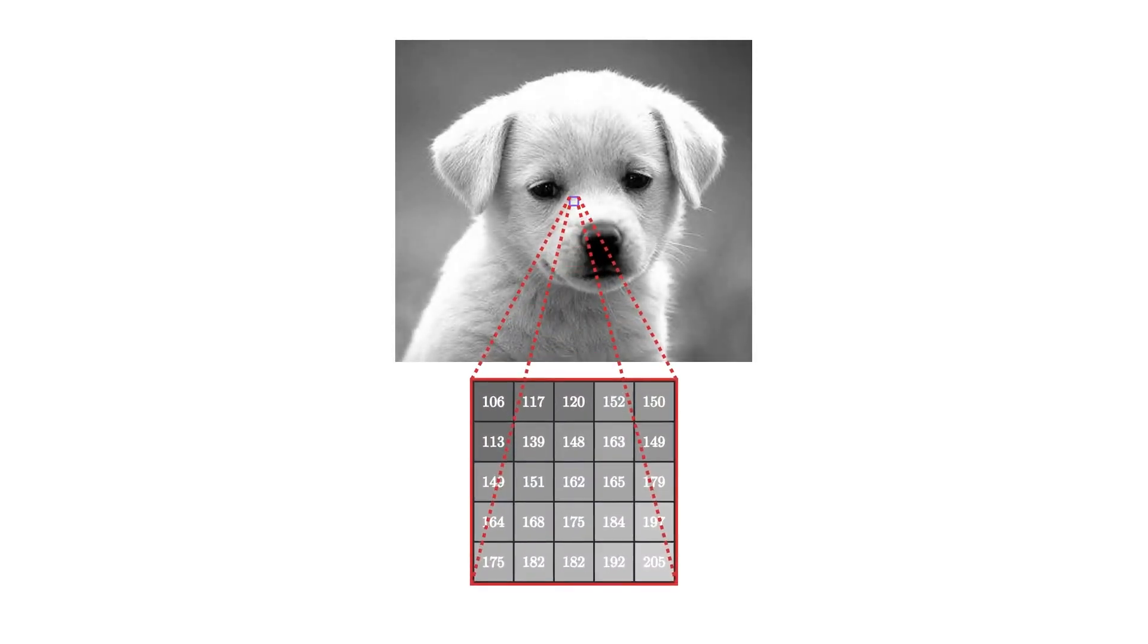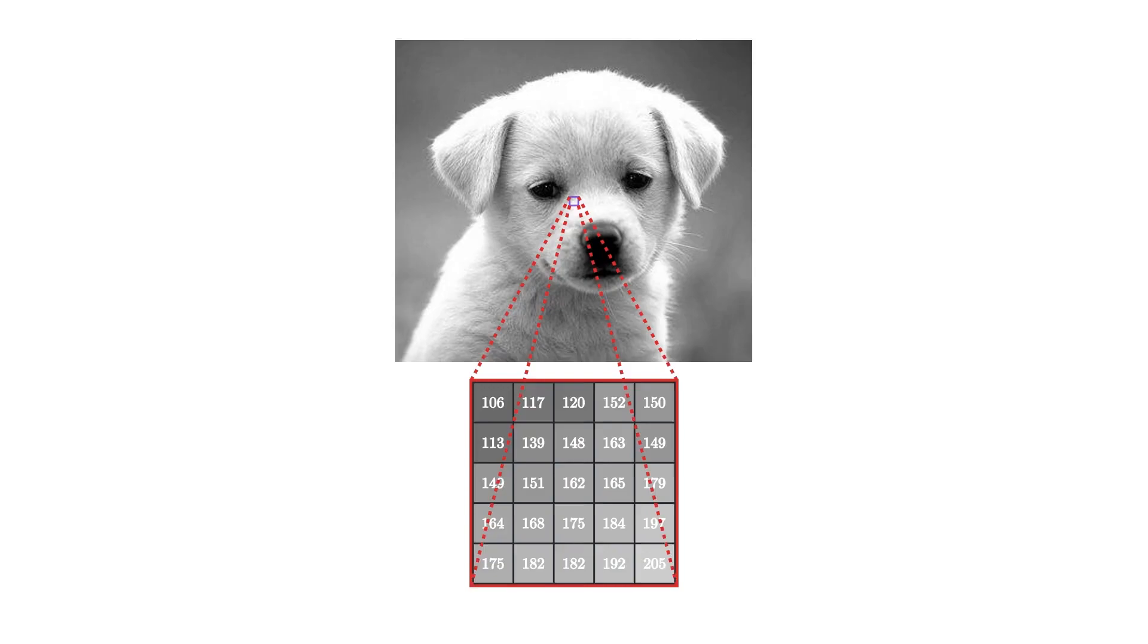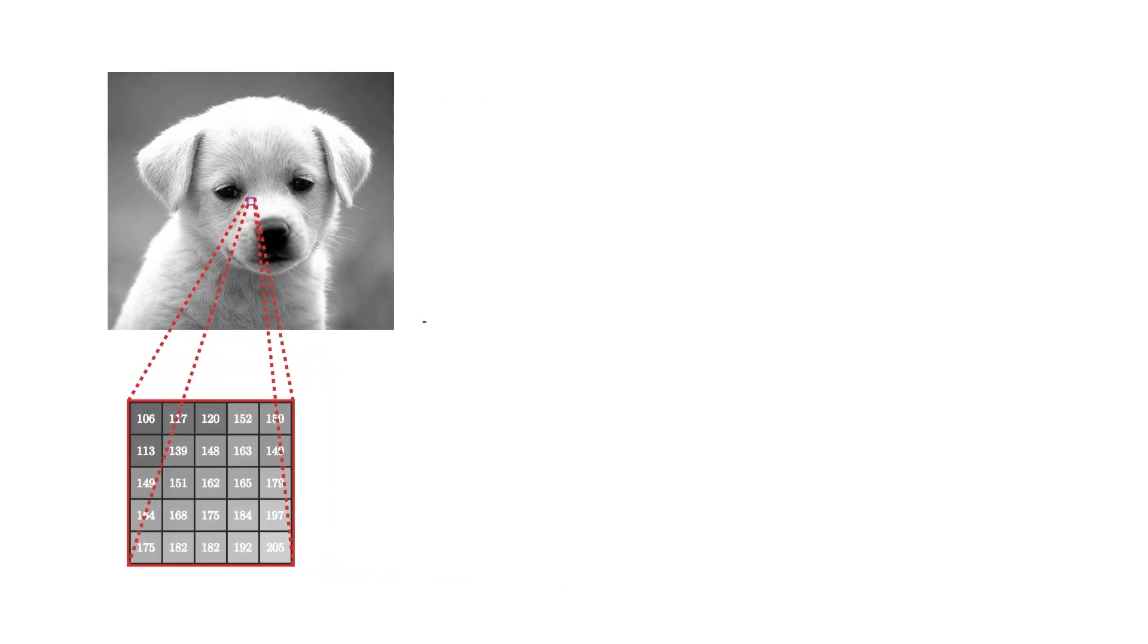Computers can easily store images as pixel values in an array, but how can we make them actually interpret these images meaningfully?